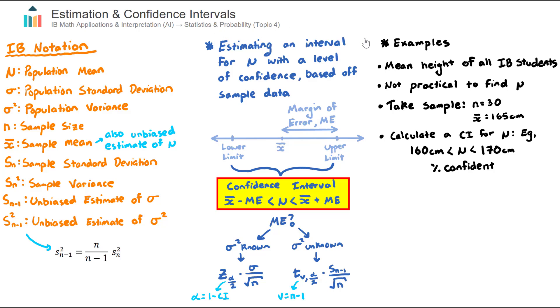To open this video, I'd like to go through a simple example to set the scene of what we're working towards here, which is building a confidence interval. Let's say I wanted to find the average height or the mean height of all IB DP students around the world, that's roughly about 300,000. Obviously it's not practical for me to start jumping on planes and visiting every single school and getting my tape measure out and measuring all 300,000 students.